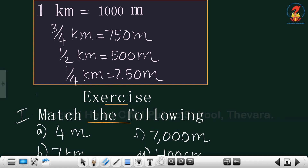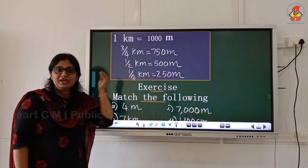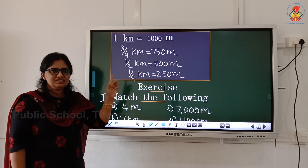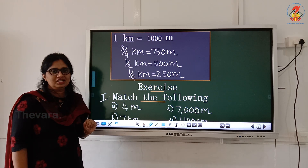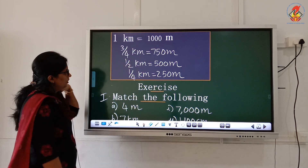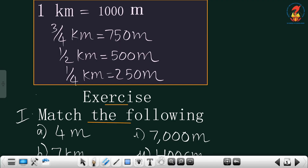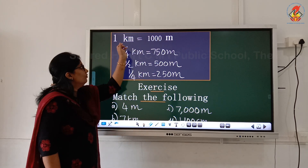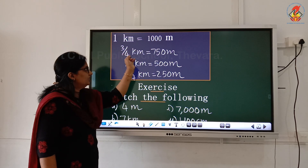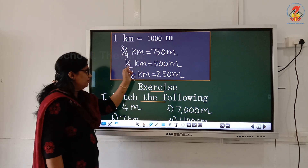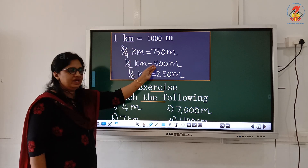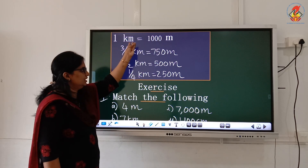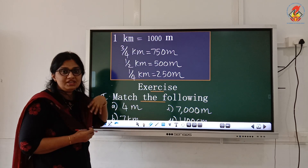1 kilometer equals 1000 meter only. And what is 3/4 kilometer? 1 kilometer is 1000 meter, so 3/4 kilometer is 750 meter. The next: 1/2 kilometer, half kilometer equals 500 meter only. And 1/4 kilometer equals how much meter? 1/4 of 1000 is 250 meter. That you need to study: 1 km = 1000 m, 3/4 km = 750 m, 1/2 km = 500 m, 1/4 km = 250 m.